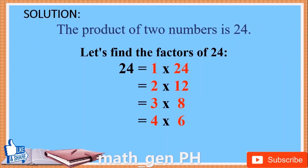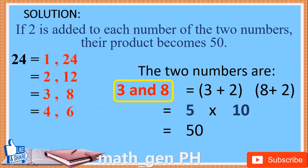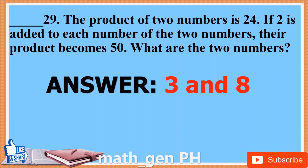Solution. The product of two numbers is 24. Let's find the factors of 24: 1 and 24; 2 and 12; 3 and 8; 4 and 6. If 2 is added to each number and the product becomes 50, the two numbers are 3 and 8. Check: (3 plus 2) times (8 plus 2) equals 5 times 10 equals 50. Answer: 3 and 8.